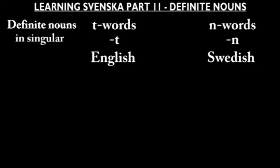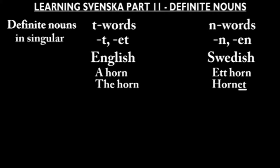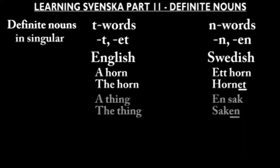However, if the word ends in a consonant, we will add either -ett or -en depending on the gender. Ett horn: hornet. En sak: saken.